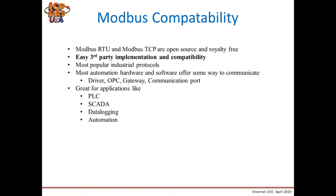Modbus RTU and TCP are both open source and third-party compatibility is very standard. They are the most popular industrial protocols and most automation hardware and software manufacturers can communicate to Modbus devices. Some applications include connecting to a PLC as an additional Modbus slave for remote IO to reduce wiring, SCADA software for reading data throughout a plant, data logging applications, and automation applications.